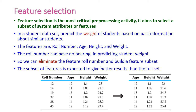What is feature selection? It is a process of selecting the subset of the system attributes or features. In the entire dataset, we are going to select only the required fields or required attributes of the dataset based on our problem. That is called feature selection. Let us see one example for this.